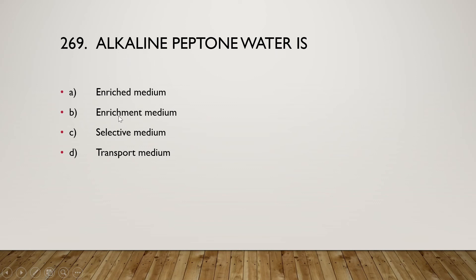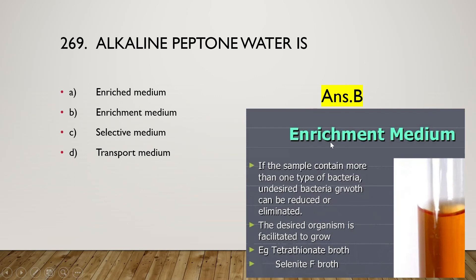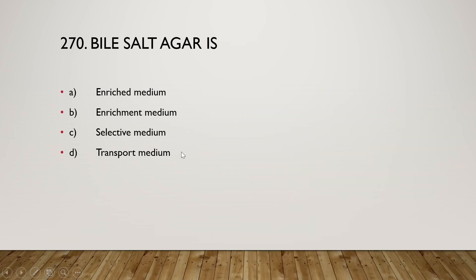Alkaline peptone water is an enrichment medium. Enrichment medium is used when a sample contains more than one type of bacteria — undesired bacterial growth is reduced or eliminated while the desired organism is facilitated to grow. Examples include tetrathionate broth and selenite F broth.